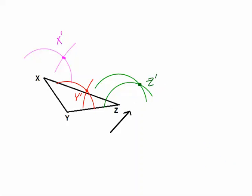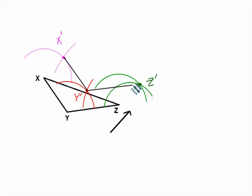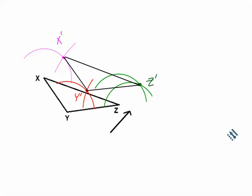Finally, we have to connect those points up. Go through the center of the points: X prime goes to Y prime, Y prime goes to Z prime, and Z prime comes back up to X prime. It should look like we translated our triangle the amount as indicated.